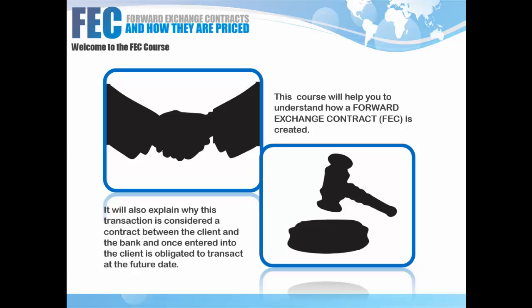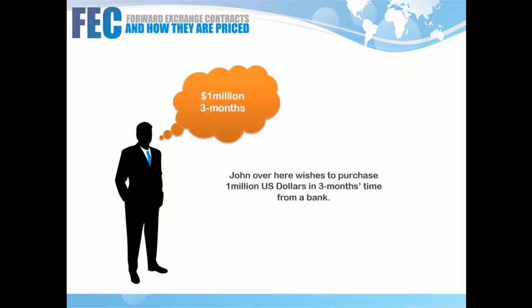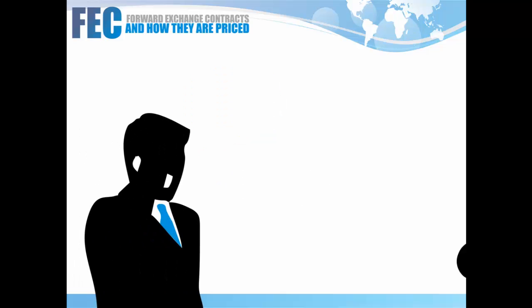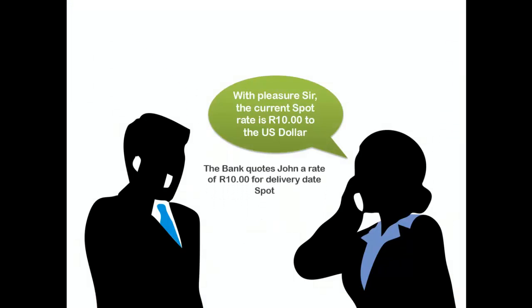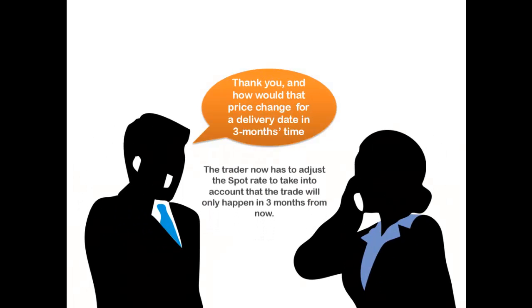Let's start by using an example. John wishes to purchase 1 million dollars in three months time from a bank. He calls up the trader and asks for a price on 1 million dollars. The trader looks at a quote screen and quotes John the current dollar spot exchange rate, which is 10 rands to the dollar. John asks: what if I need that price for a delivery date three months from today? The trader now has to adjust the spot rate to take into account that settlement is only required in three months, so the spot rate needs to be adjusted with forward points.